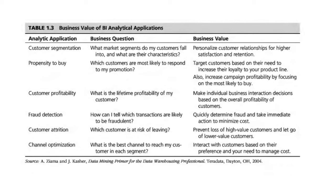The customer attrition application asks which customers are at risk of leaving, with the outcome being to prevent loss of high-value customers while letting go of lower-value ones. Channel optimization asks which is the best channel to reach customers in each segment, with the value being to interact with customers based on their preferences and manage costs. This information is drawn from SAS's data mining primer for data warehousing professionals.